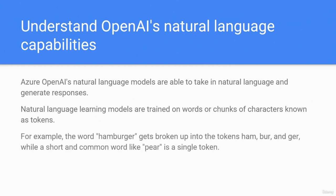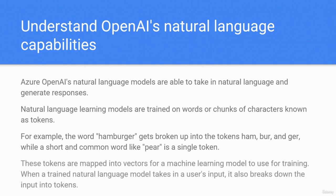For example, the word 'hamburger' gets broken up into tokens: 'ham,' 'bur,' and 'ger,' while a short and common word like 'beer' is a single token. These tokens are mapped into vectors for the machine learning model to use for training. When a trained natural language model takes in a user's input, it also breaks down the input into tokens.